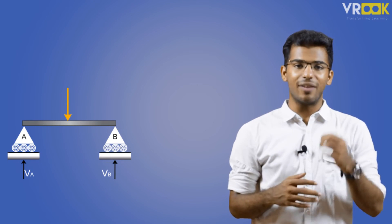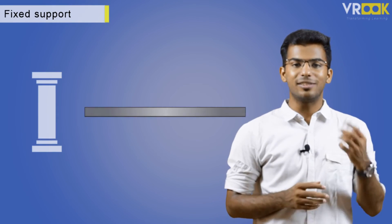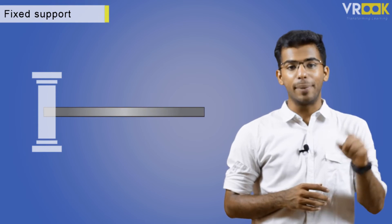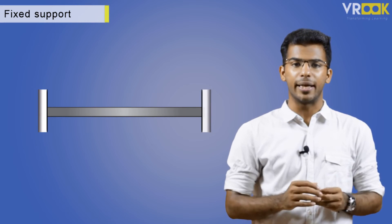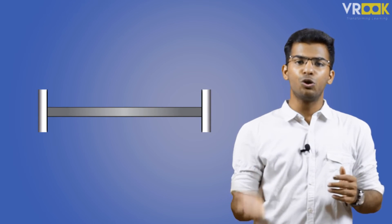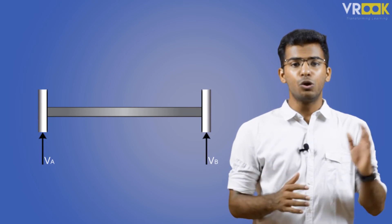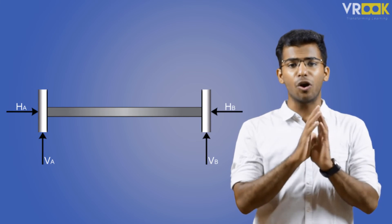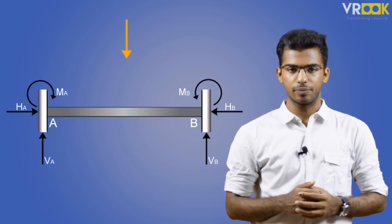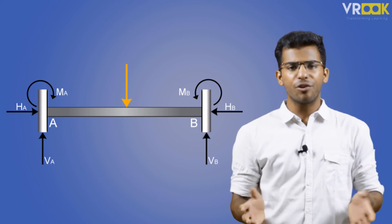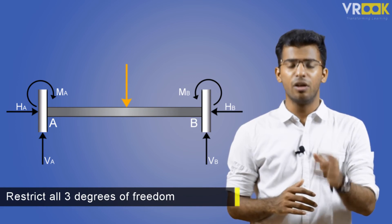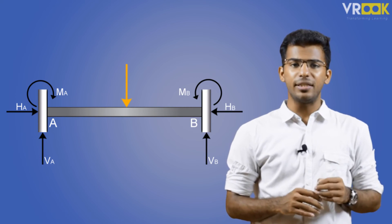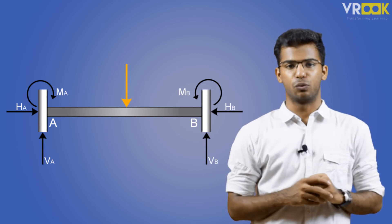Then at last we have another type of support called fixed support. The best example is a beam fixed inside a pillar in all the buildings. It means if you consider a point in a 2D plane, it is not allowed to move up and down or not allowed to move right or left, and it cannot rotate clockwise or anti-clockwise. So in this beam you can restrict all three degrees of freedom for a particular point on the beam. Fixed support is represented like this with all the reaction forces.